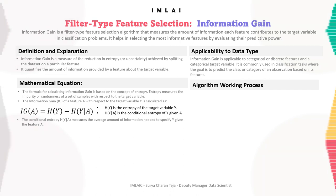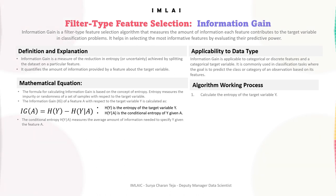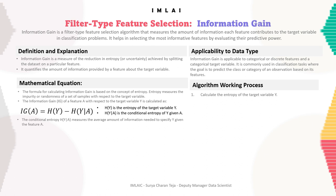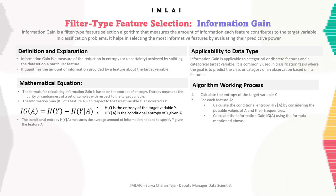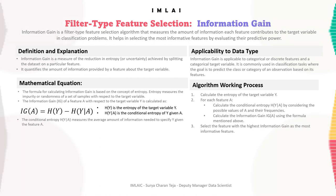First, calculate the entropy of the target variable Y. Then, for each feature A, calculate the conditional entropy H(Y|A) by considering the possible values of A and their frequencies. Next, calculate the information gain IG(A) using the formula above. Finally, select the feature with the highest information gain as the most informative feature.